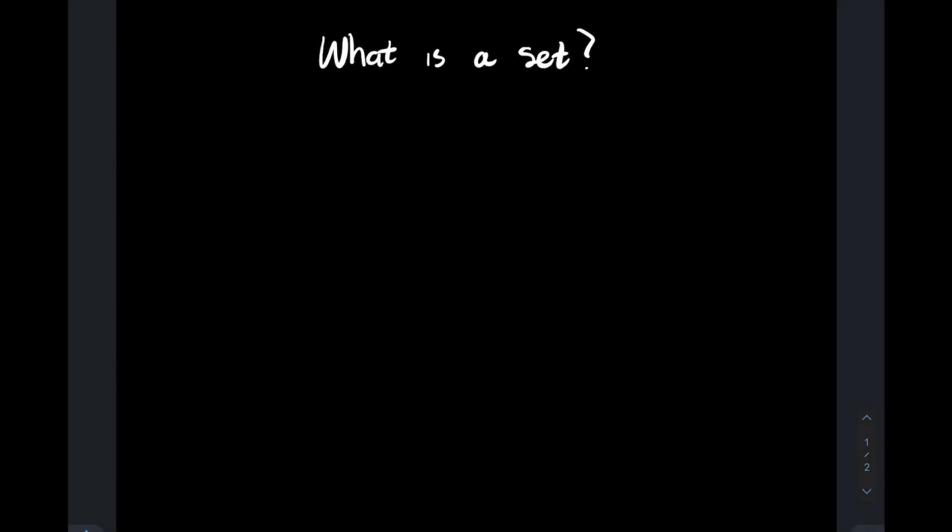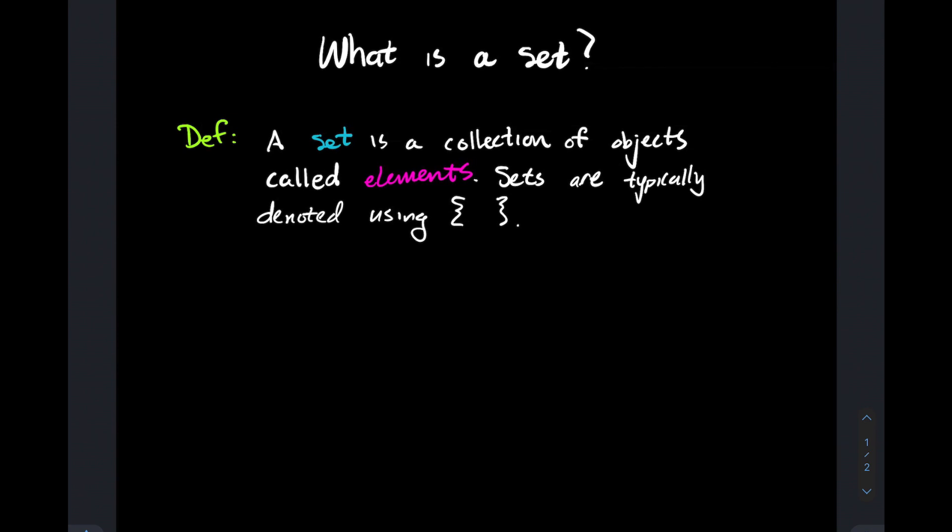In this video we're going to talk about what is a set. So let's start off with the definition. A set is a collection of objects called elements, and sets are typically denoted using curly braces or squiggly brackets. The intuition for what a set is: think of a set as a list with some extra rules. We'll talk about the extra rules as we go.